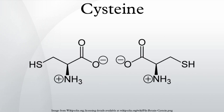In animals, biosynthesis begins with the amino acid serine. The sulfur is derived from methionine, which is converted to homocysteine through the intermediate S-adenosylmethionine. Cystathionine beta-synthase then combines homocysteine and serine to form the asymmetrical thioether cystathionine. The enzyme cystathionine gamma-lyase converts cystathionine into cysteine and alpha-ketobutyrate. In plants and bacteria, cysteine biosynthesis again starts from serine, which is converted to O-acetylserine by serine transacetylase. The enzyme O-acetylserine lyase, using sulfide sources, converts this ester into cysteine, releasing acetate.